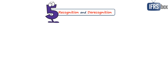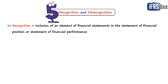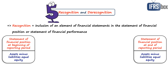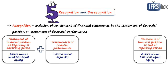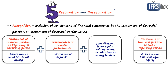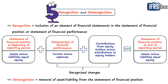Chapter 5 is about recognition and de-recognition. Recognition means inclusion of an element into the financial statements when it meets the definition, and it links the elements in the statement of financial position and the statement of financial performance. Assets minus liabilities equal equity at both the beginning and end of the reporting period, and recognized changes during the period include income minus expenses and contributions from or distributions to holders of equity. De-recognition is the removal of all or part of a recognized asset or liability from the statement of financial position, and the framework sets criteria for both recognition and de-recognition.